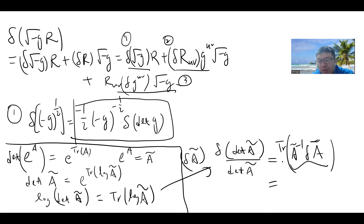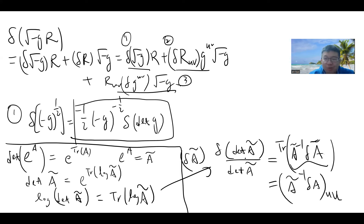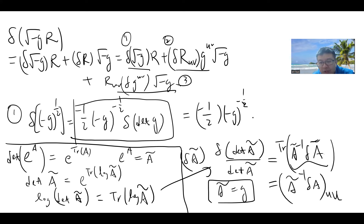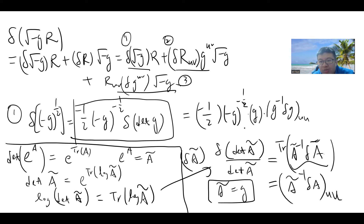In terms of the trace identity, we have: δ(det Ã) = det(Ã) · tr(Ã⁻¹ δÃ), which in index notation is just Ã⁻¹^{uu} δÃ_{uu}, summing over indices. Now setting Ã = g, we get: δ(det g) = g · g^{UV} δg_{UV}.